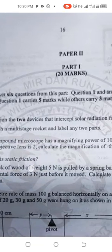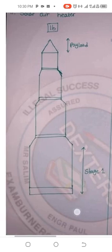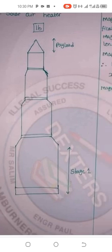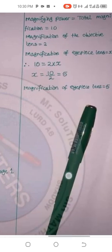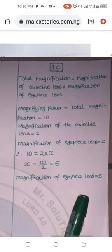The solution to number one: for question 1A, the two devices that intercept solar radiation are a solar water heater and a solar air heater. Question 1B was to sketch a rocket diagram and label any two parts — you can see the diagram here showing the payload, stage one, and other stage parts. Question 1C is to calculate the magnification of the eyepiece lens — you can see the solution and working on screen.